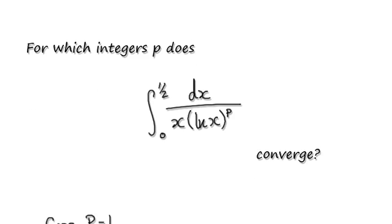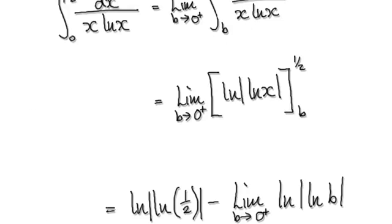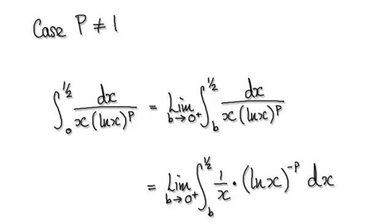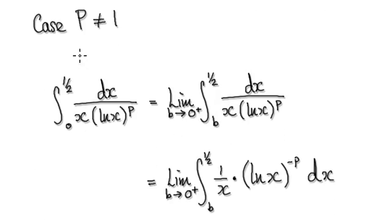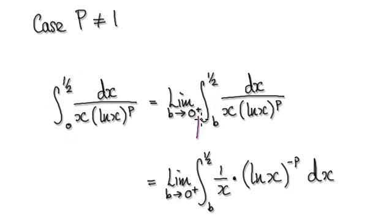Following on from the previous two videos, we now need to look at the case where p does not equal 1. Our normal routine would be to integrate from b to a half, and then allow b to head towards 0 from the right-hand side.